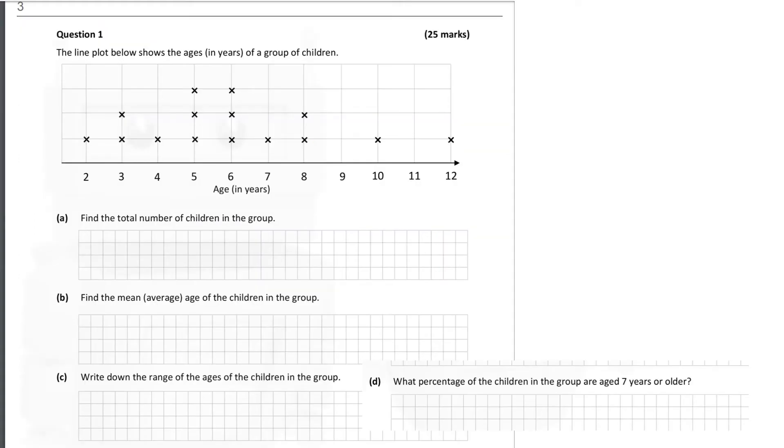So moving on. This question 3 here, it's question 1 from a random chosen paper. The line plot shows the ages in years of a group of children. And so we can see from the chart that each mark on the chart represents a child and their age. So we can see that there is one child aged 2 years, there are two children aged 3, one child aged 4 and so on. Down to one child 12 years of age.